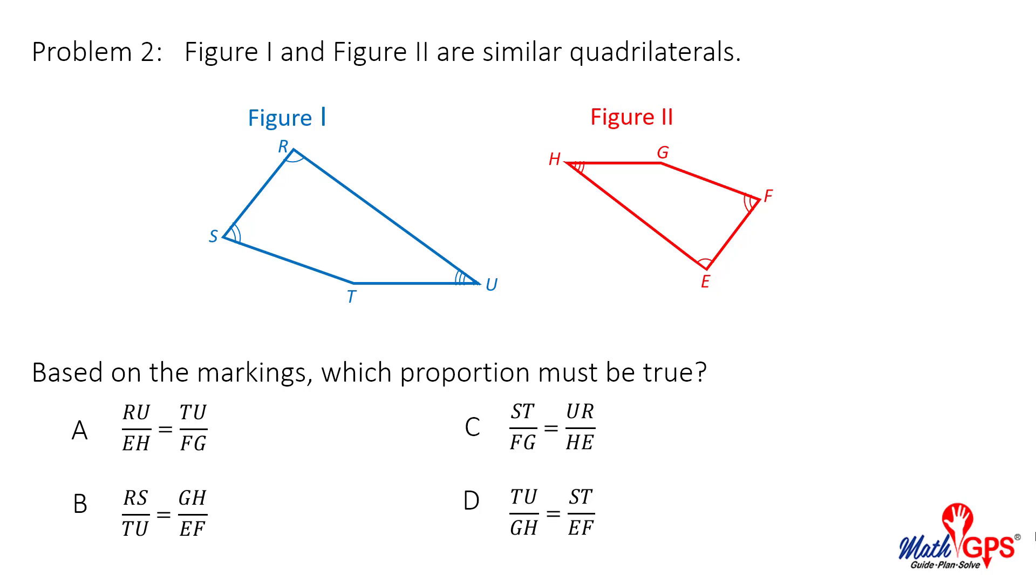Problem 2. Figure 1 and Figure 2 are similar quadrilaterals. Based on the markings, which proportion must be true? The correct answer is C. The corresponding sides are named in the proportion correctly.